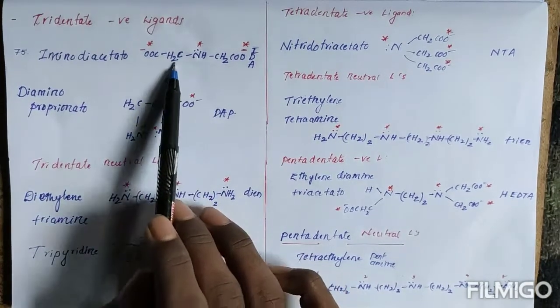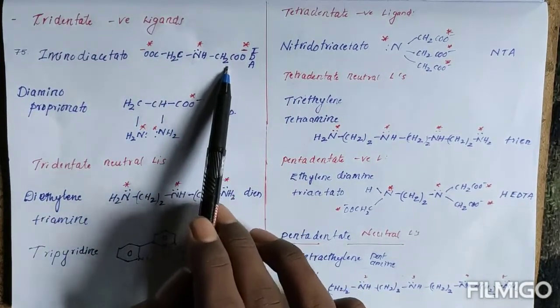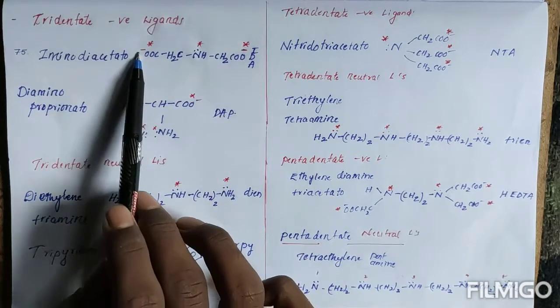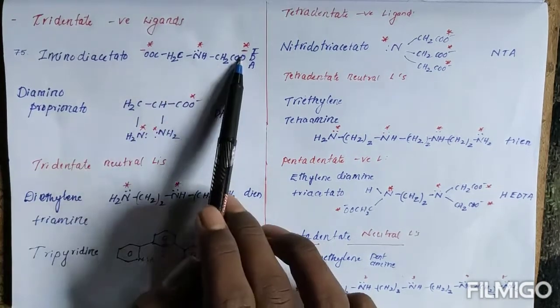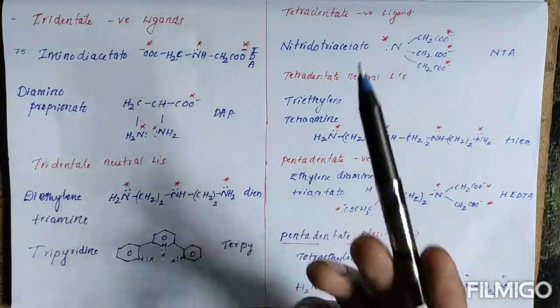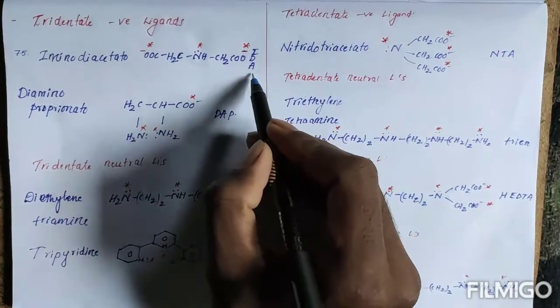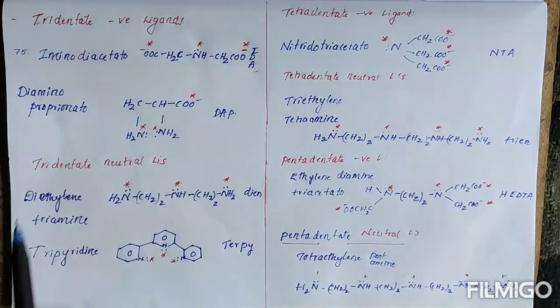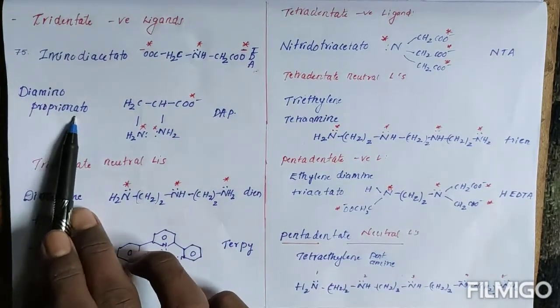This is imine group, diacetate. These are acetic acids, so we have eliminated H from here and H from here, and we can get iminodiacetate. This is represented with IDA in coordination sphere. So diaminopropionate.